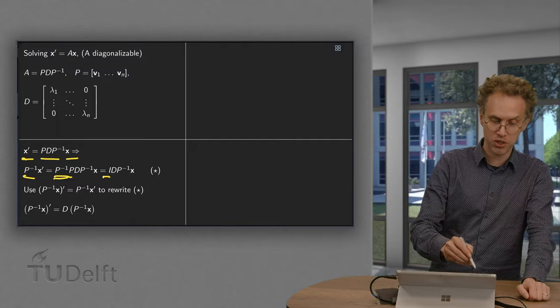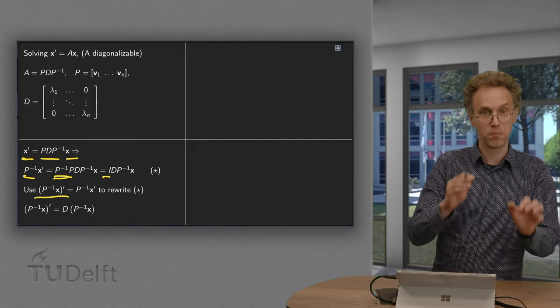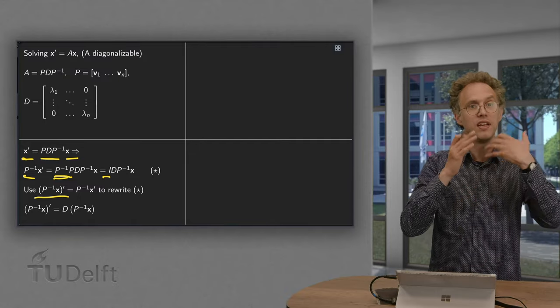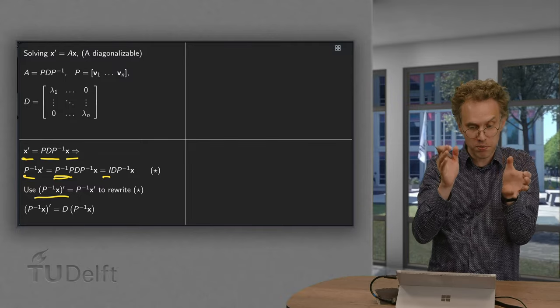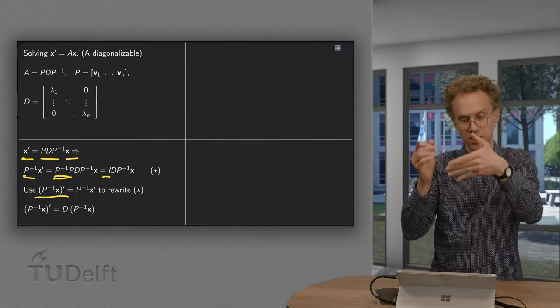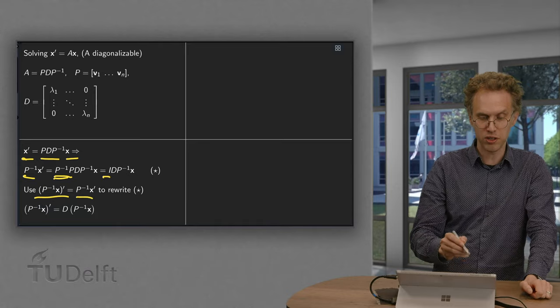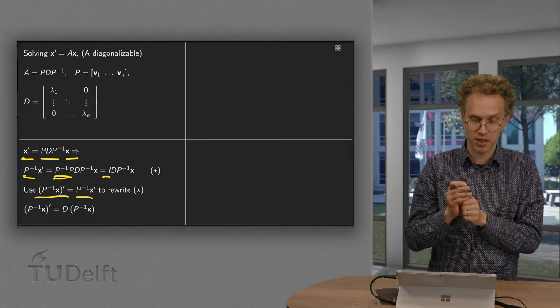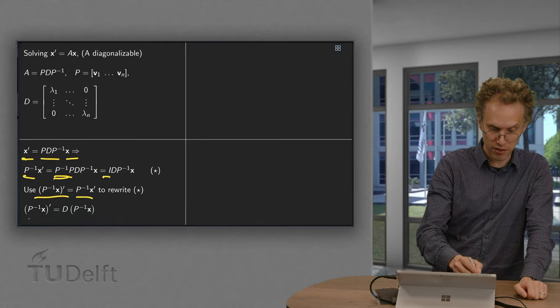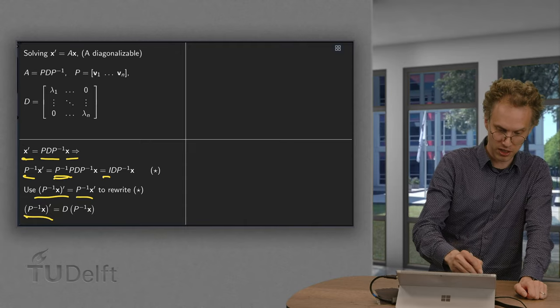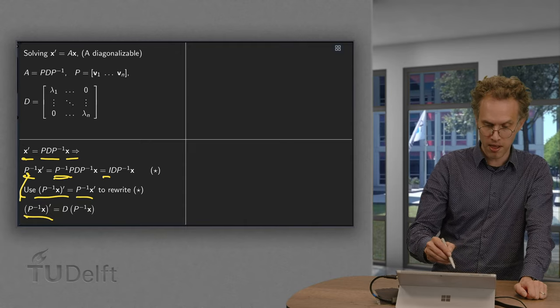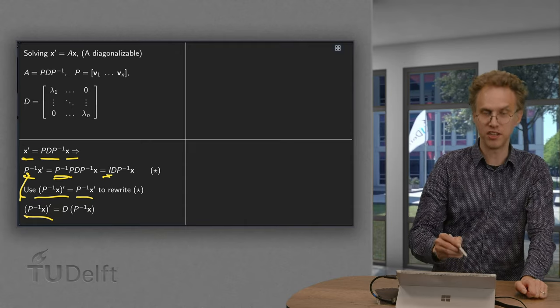And then we use that p inverse times x prime - the p is just a constant so we can take it out. So p inverse times x prime equals p inverse times x prime. So we use that to rewrite p inverse times x prime as the derivative of p inverse times x. So that's what we do over here.